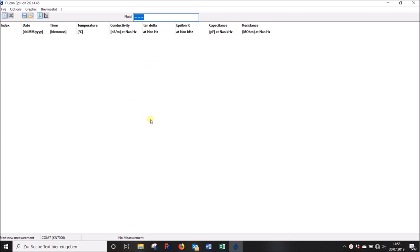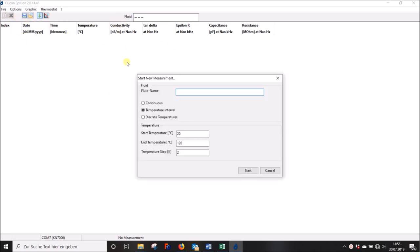This is what the program window looks like. Start a measurement by clicking on File or on the empty sheet symbol. Now this screen will pop up asking you to fill in a fluid name for your sample.